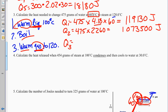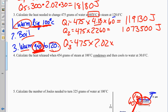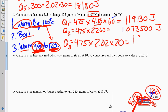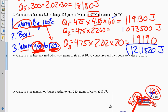Q3: warming the gas. We've already paid to get to 100 degrees, so we only need 20 more degrees to reach 120. Q equals MC delta T: 475 times 2.02 times 20 equals 19,190 joules. Adding them all up gives a final answer of 1,211,820 joules.